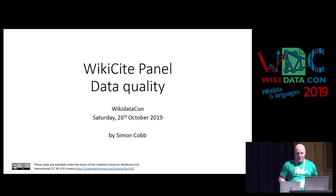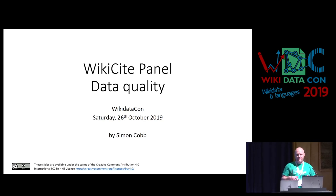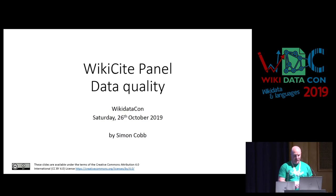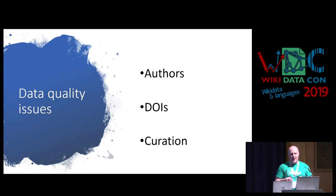What I want to talk about is an example of something we could potentially focus on within the scope of WikiCite — the data quality issues I've been encountering over the last year as I've been editing scholarly papers. The three issues I'm going to briefly touch on are the quality of author items being attached to scholarly articles, issues around DOI formats, and general curation of the data we're creating.